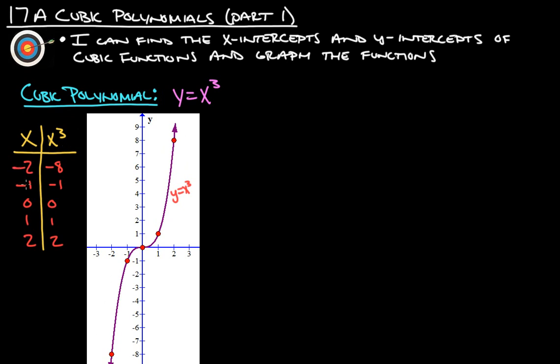So we usually start with negative 2, negative 1, 0, 1, and 2. Negative 2 cubed is negative 8. Negative 1 cubed is negative 1. 0 cubed is 0. 1 cubed is 1. 2 cubed is 8.